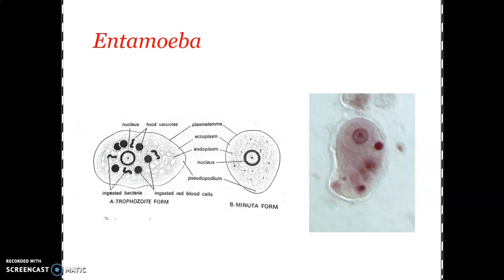The minuta form undergoes encystment, which is why it is known as the pre-cystic form. It undergoes encystation and helps in the transmission of the parasite from one host to another. The trophozoite form enters the submucosal layer and in severe cases enters the bloodstream, reaching various organs — it is pathogenic to the host. The minuta form, while not pathogenic, is responsible for transmission of the parasite from one host to another.